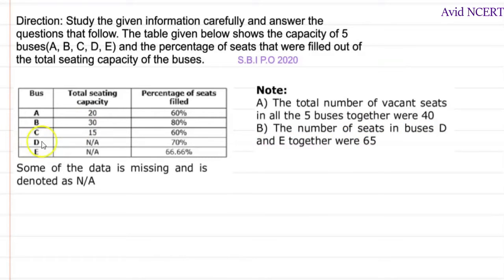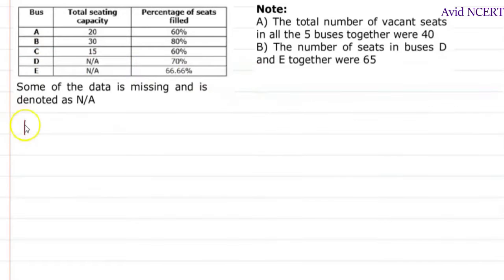So first let's find the data for D and E. Here is bus, total seats, filled seats, and vacant seats. For bus A, the total seat is 20 whereas 60% is filled which means 6 times 2 is 12. So the vacant seat is 20 minus 12, total seats minus filled seats, which is 8.